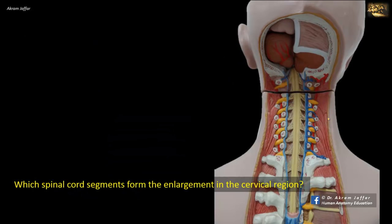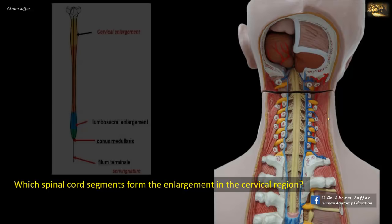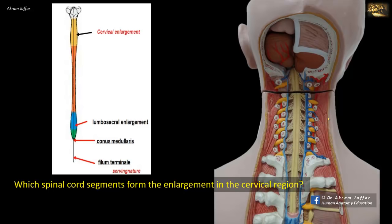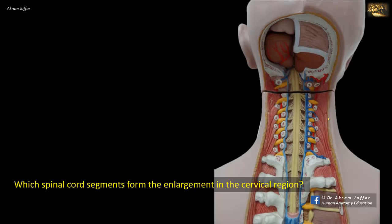Which spinal cord segments form the enlargement in the cervical region? The spinal cord is an elongated cylinder whose diameter increases in two regions called enlargements, corresponding to the cord regions from which the spinal nerves supplying the upper and lower limbs originate. The cervical enlargement includes segments C5 to T1, where the corresponding nerves form the brachial plexus. The lumbosacral enlargement includes segments L2, L3, L4, L5, S1, S2, and S3, constituting most of the lumbar and sacral plexuses of nerves that supply the lower limb.